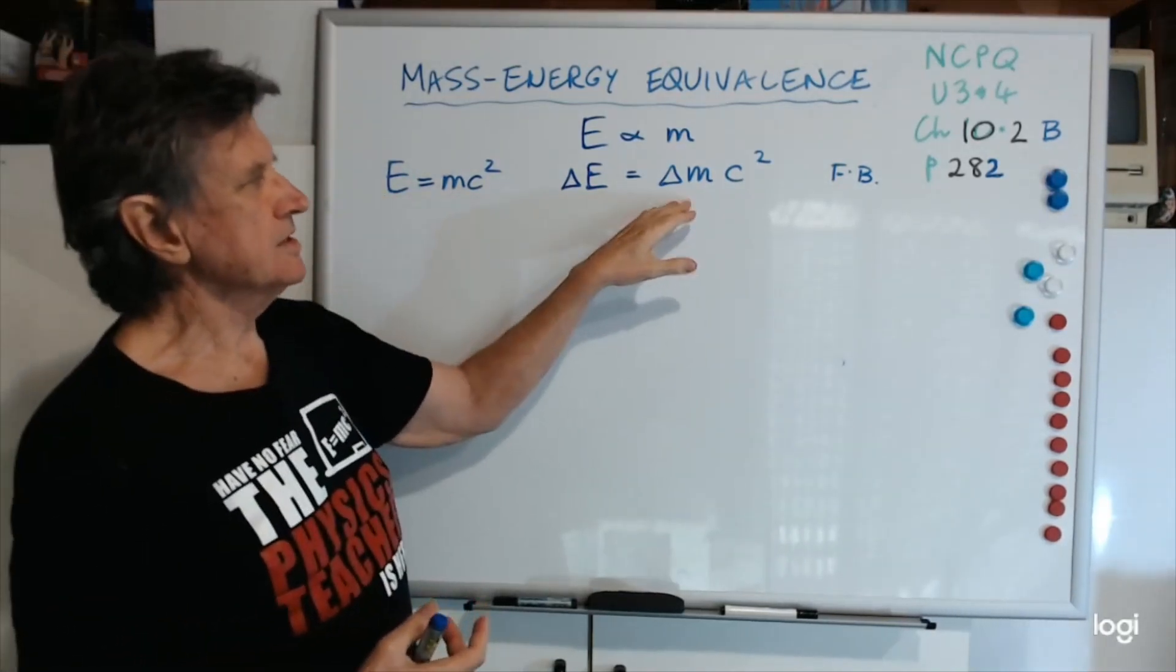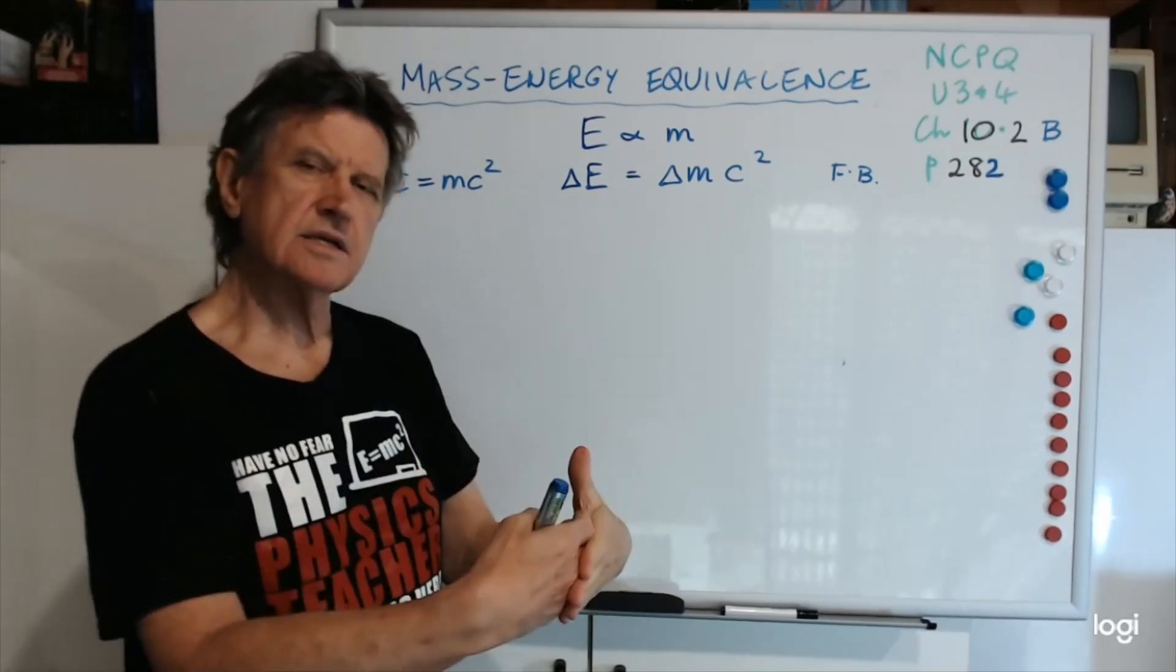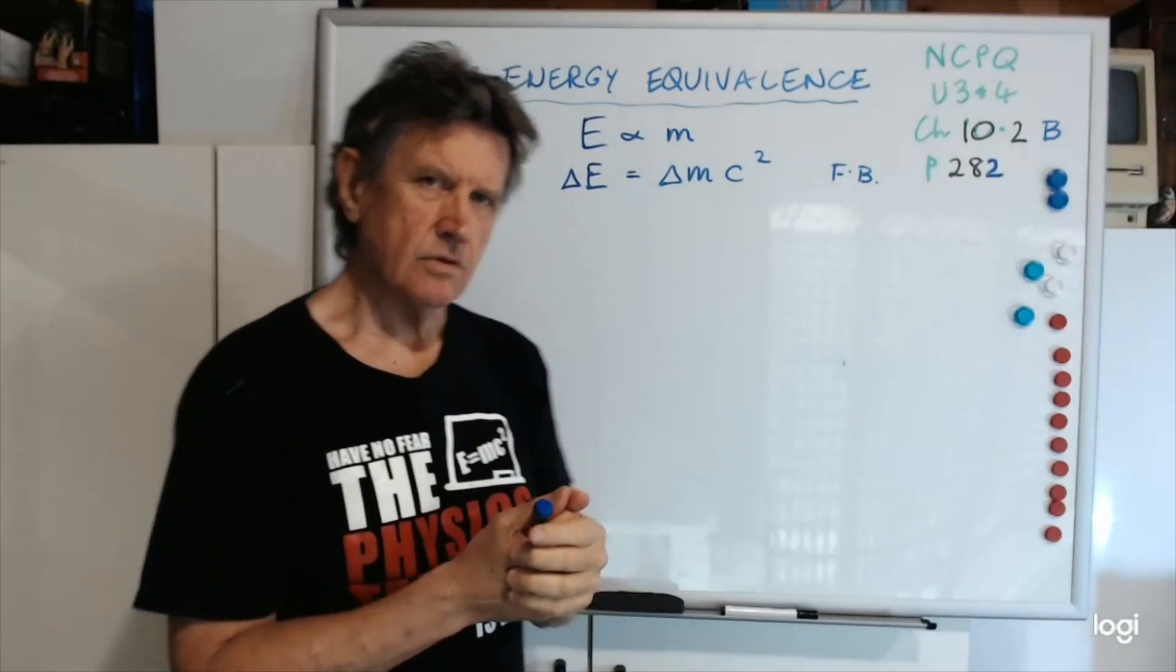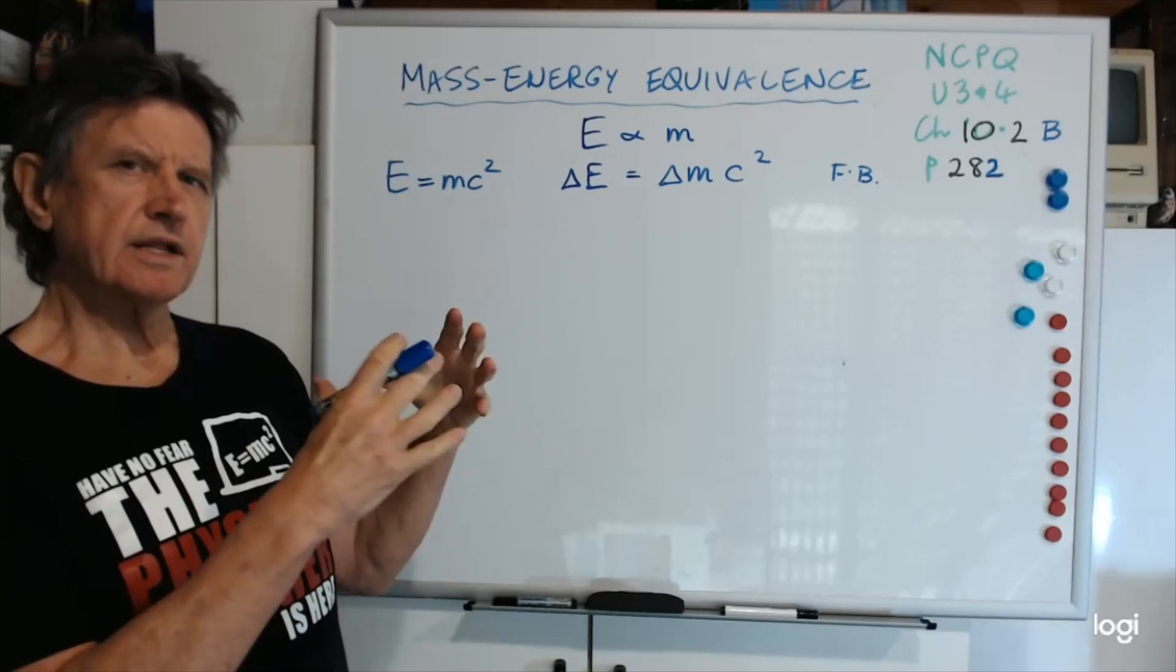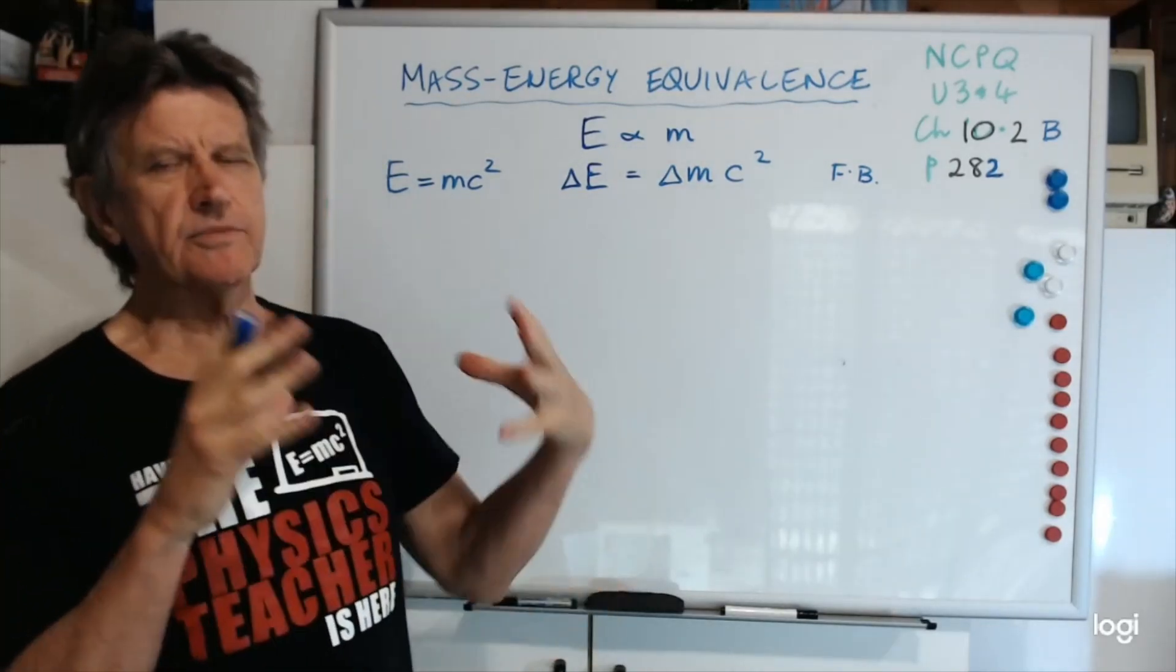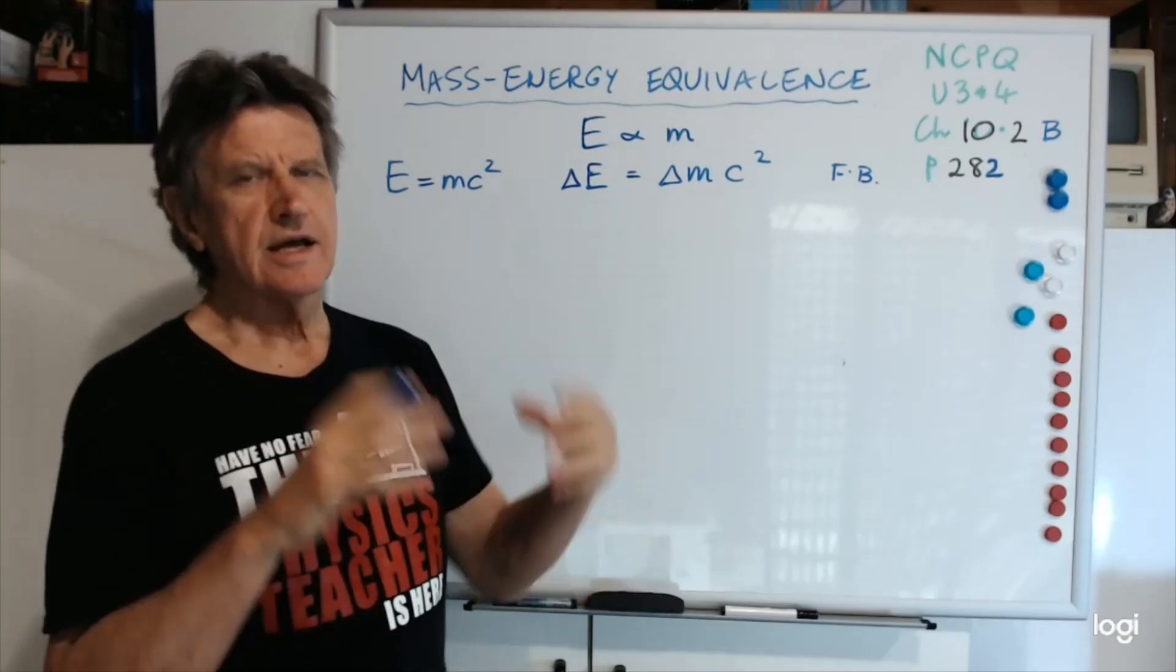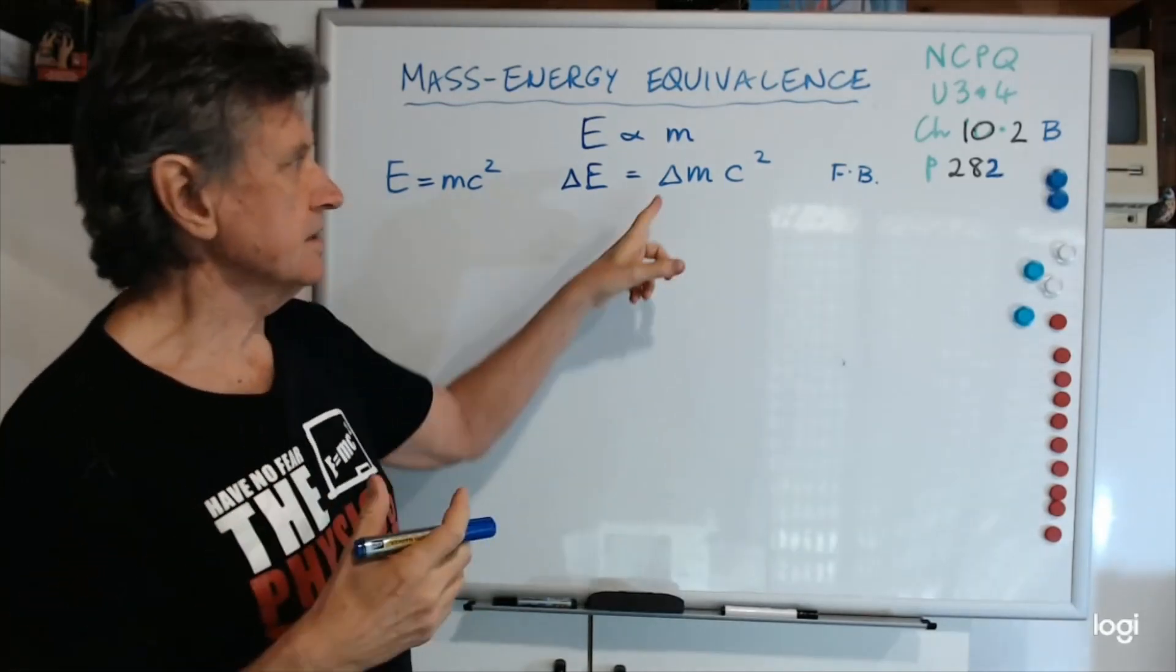It's better to use it like this, where this is the change in mass. So when you react something, you look at the mass to start with and the mass to finish with, and you take the two away, and you get the delta m. Now you did that in unit 1 when you were talking about binding energy. You worked out the mass of all the constituent particles of an atom, and you took that away from the mass of the nuclide itself. So you added up all the protons and neutrons and electrons, and subtracted that from the mass of the nuclide including the electrons, and you got a delta m value.